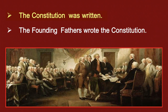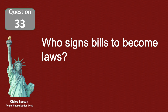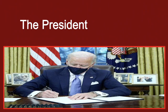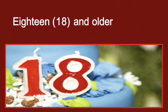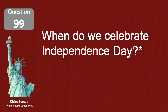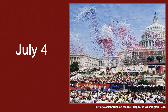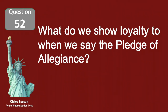What happened at the Constitutional Convention? The Constitution was written. Who signs bills to become laws? The president. How old do citizens have to be to vote for president? 18 and older.